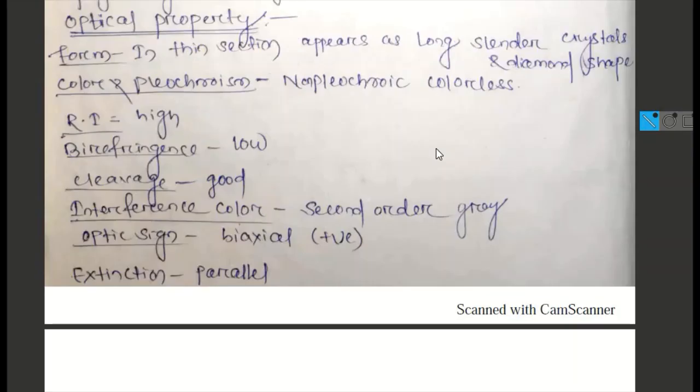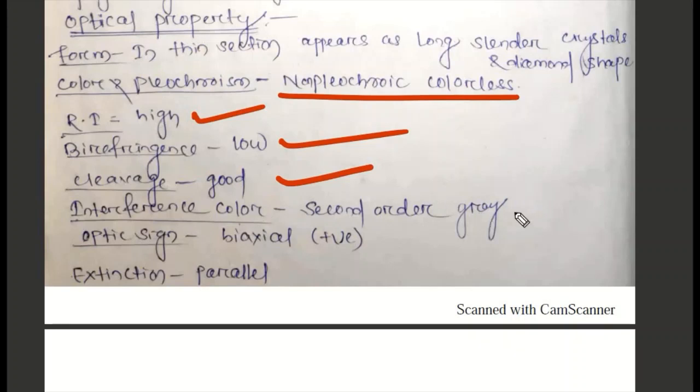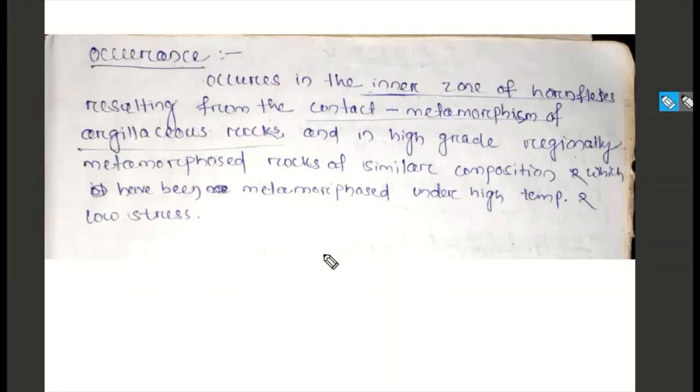Optical property: Form in thin section appears as long slender crystals with diamond shape. Color non-pleochroic, colorless. Refractive index high, birefringence low. Cleavage good. Interference color second order gray. Biaxial positive optic sign. Extinction parallel. Occurrence: Occurs in the inner zone of contact metamorphism and in high grade regional metamorphosed rock of similar composition which have been metamorphosed under high temperature and low stress.